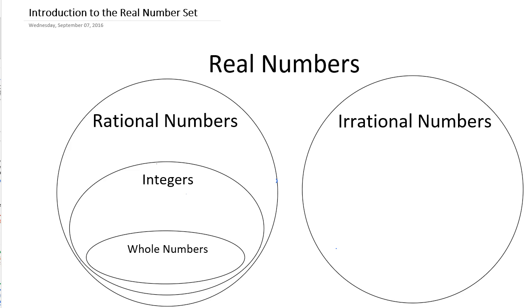The real number set are all of our positive numbers, our negative numbers, our whole numbers, our fractions, our decimals, and then our irrational numbers, which we talked about the other day. There is another set of numbers called imaginary numbers that we're not going to worry about. But it's important that we understand the set of numbers that we're working with on an everyday basis.